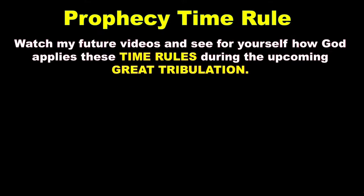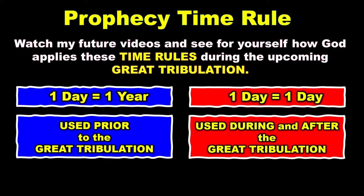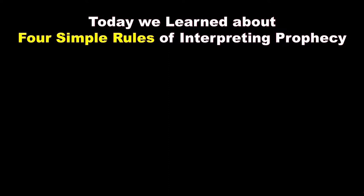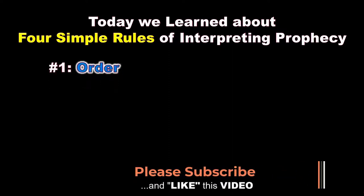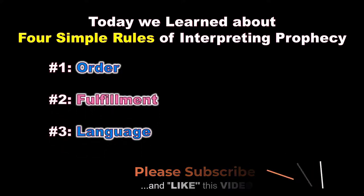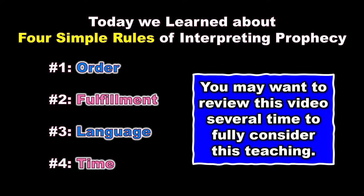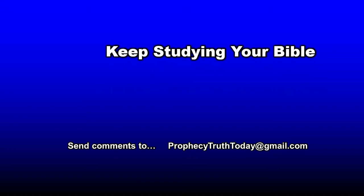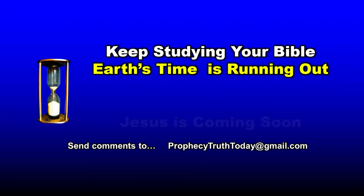So, the prophecy timeline rules: watch future videos and see for yourself how God applies these time rules during the upcoming Great Tribulation. A day equals a year is used prior to the Great Tribulation. A day equals a day is used during and after the Great Tribulation. Today we learned about four simple rules of interpreting prophecy — order, fulfillment, language, and time. You may want to review this video several times in order to fully consider this teaching. Keep studying your Bible. Earth's time is running out. Jesus is coming soon.